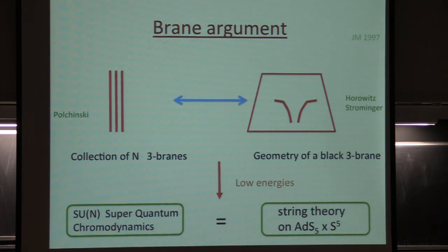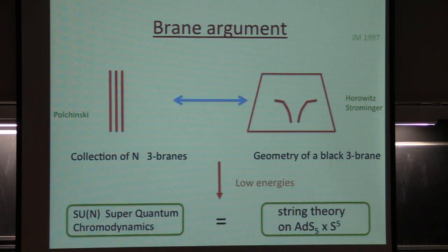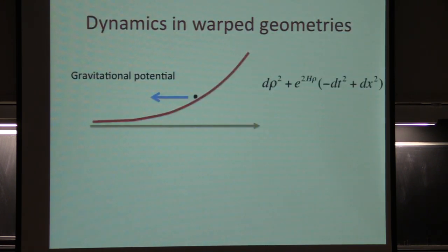On the other side, the near-horizon geometry of these black branes is anti-de Sitter space times a five-sphere. 'Black' here means the geometry has a horizon, similar to a black hole — more precisely an extremal black hole with zero temperature. If you have a black hole with non-zero temperature, that's the same as having super-QCD at finite temperature. One can present many plausibility arguments and consistency checks for this relationship. To make it more plausible, let me discuss what physics looks like in anti-de Sitter space.